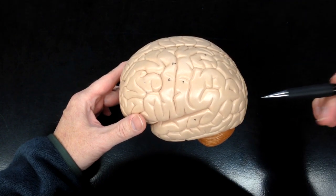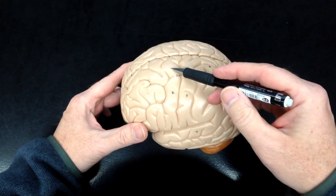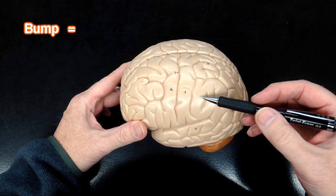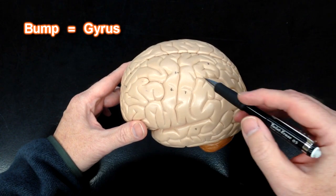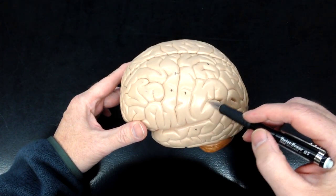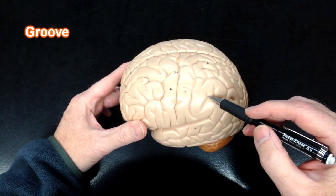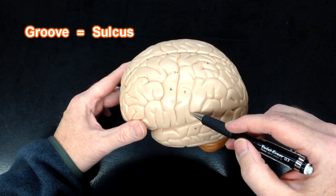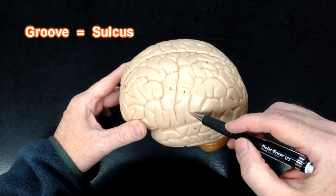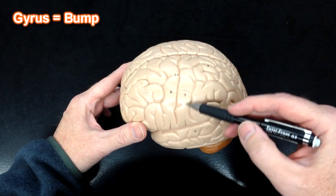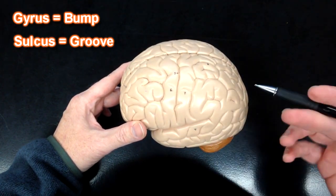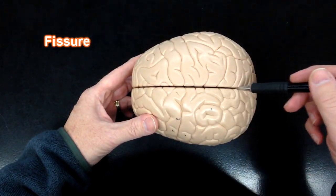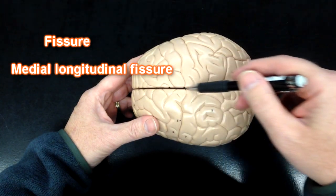The bumps and the grooves have different names. A bump in the cerebrum is called a gyrus. The grooves that separate the gyri — gyri being the plural of gyrus — those are called sulcuses or sulci. So a gyrus is a bump and a sulcus is a groove. If a groove is really large then it's called a fissure. This would be the medial longitudinal fissure.